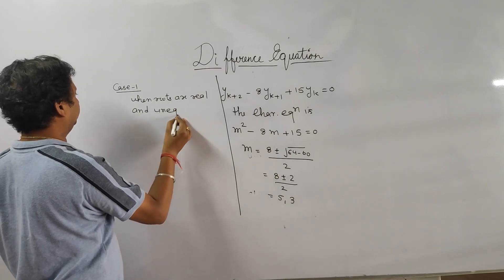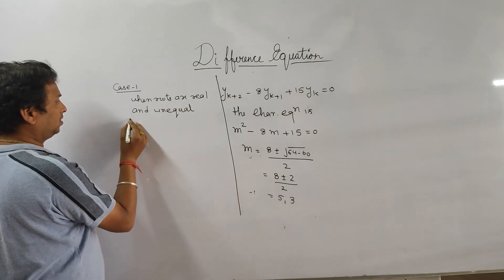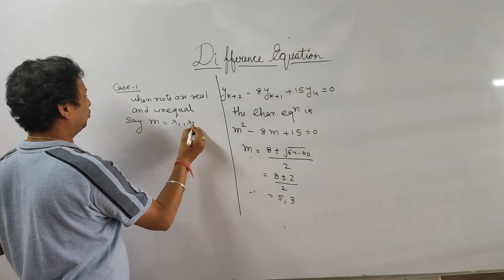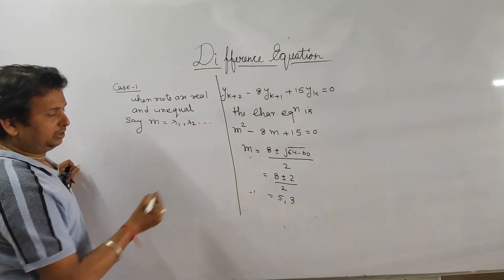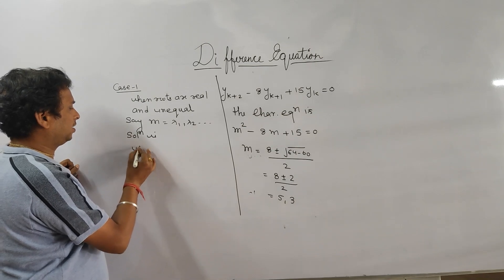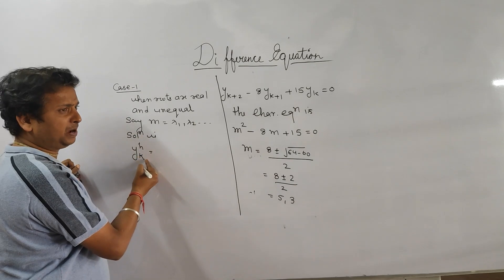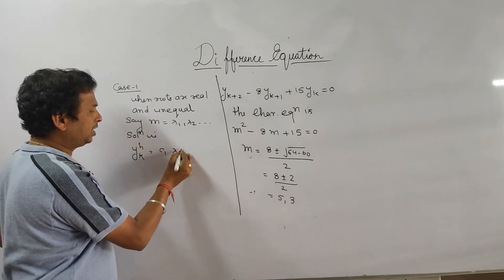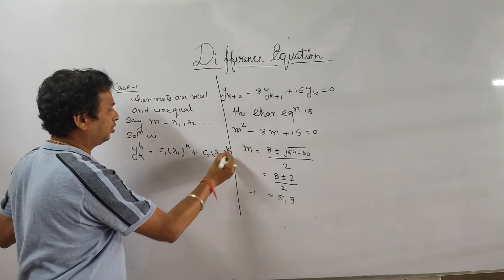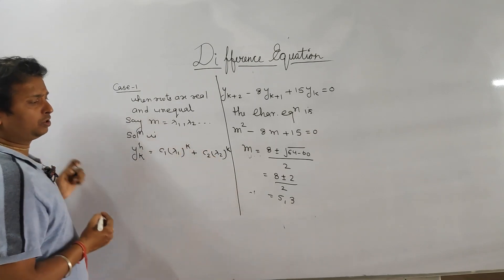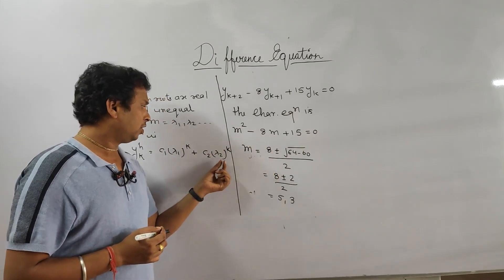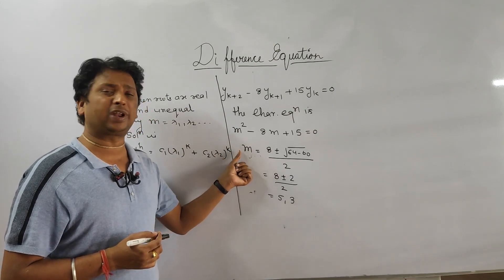Case 1: When roots are real and unequal, say m equals lambda_1, lambda_2, and so on. In this case, the complementary function solution is y_k^h equals c1 times lambda_1 to the power k, plus c2 times lambda_2 to the power k, where c1 and c2 are arbitrary constants and lambda_1, lambda_2 are the roots. For a third-degree equation, we simply add c3 times lambda_3 to the power k, and so on.